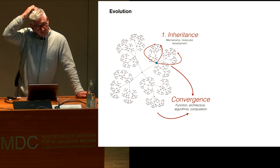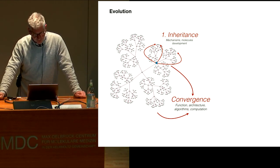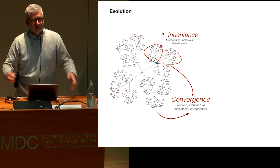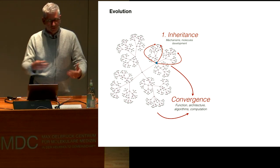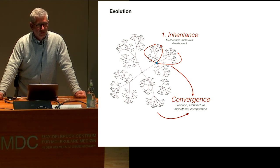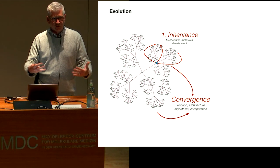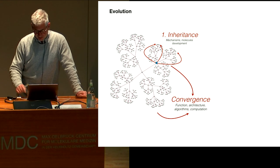Another way of looking at evolution within neuroscience is to emphasize the aspect of convergence — that many aspects of the way circuits function, compute, and generate an output are the result of convergent evolution, meaning something separate from the specific implementation by molecules, synapses, and neurons. I want to give a few examples of this.